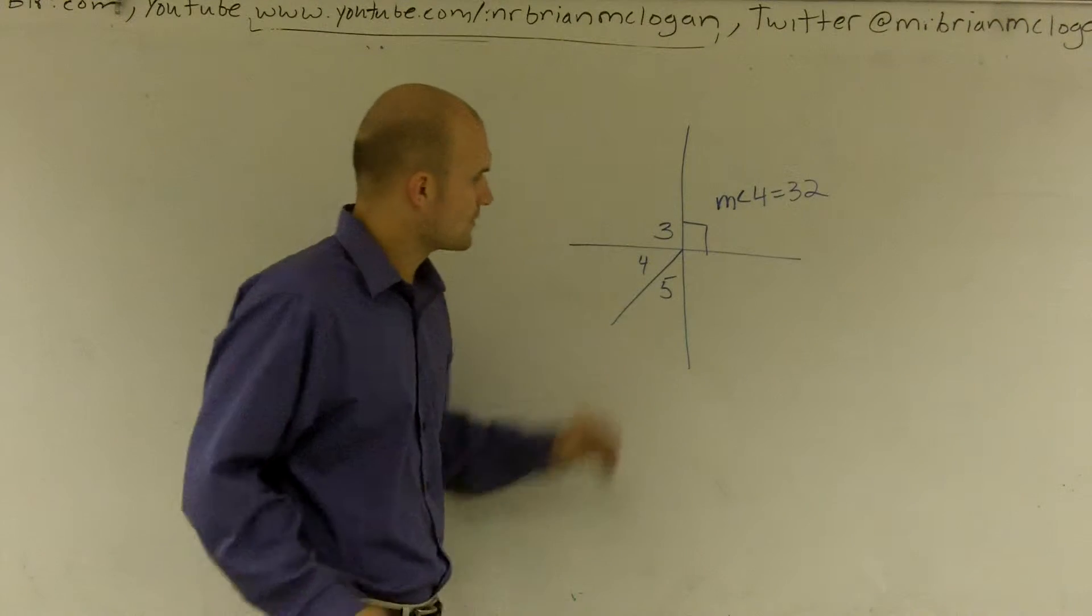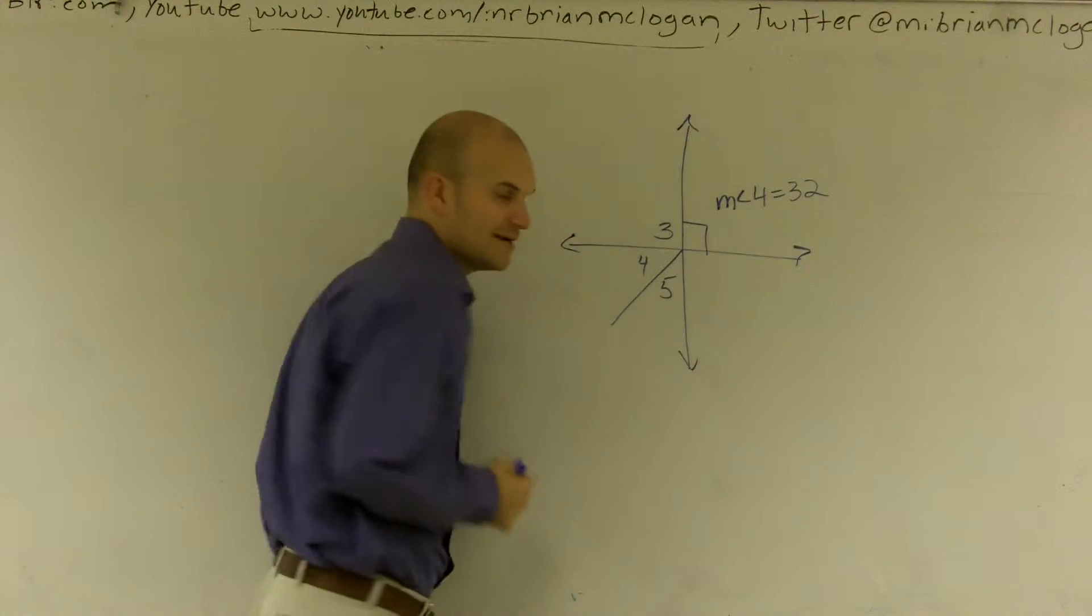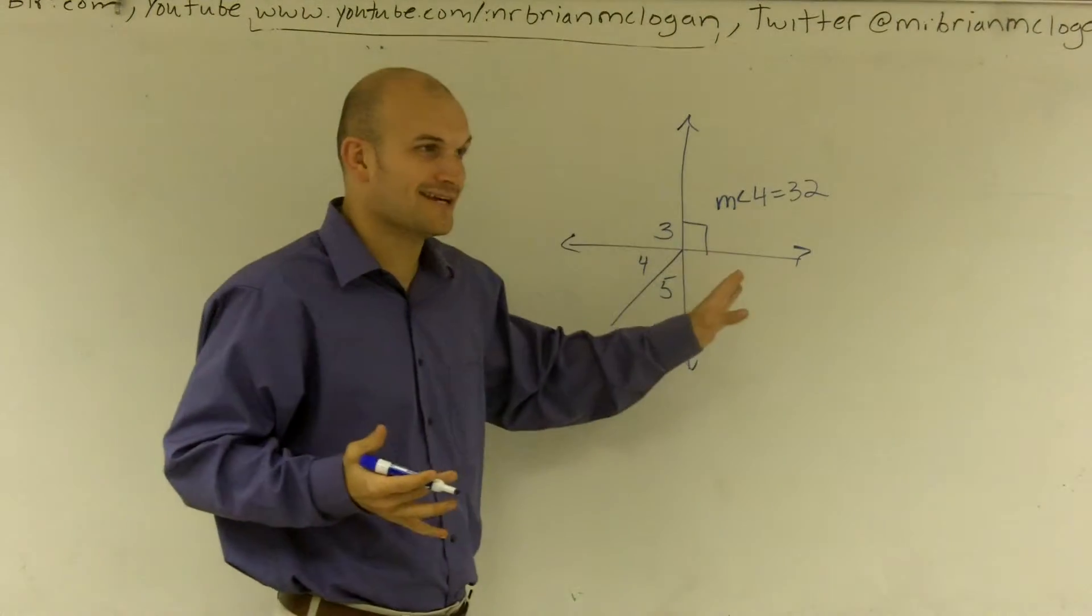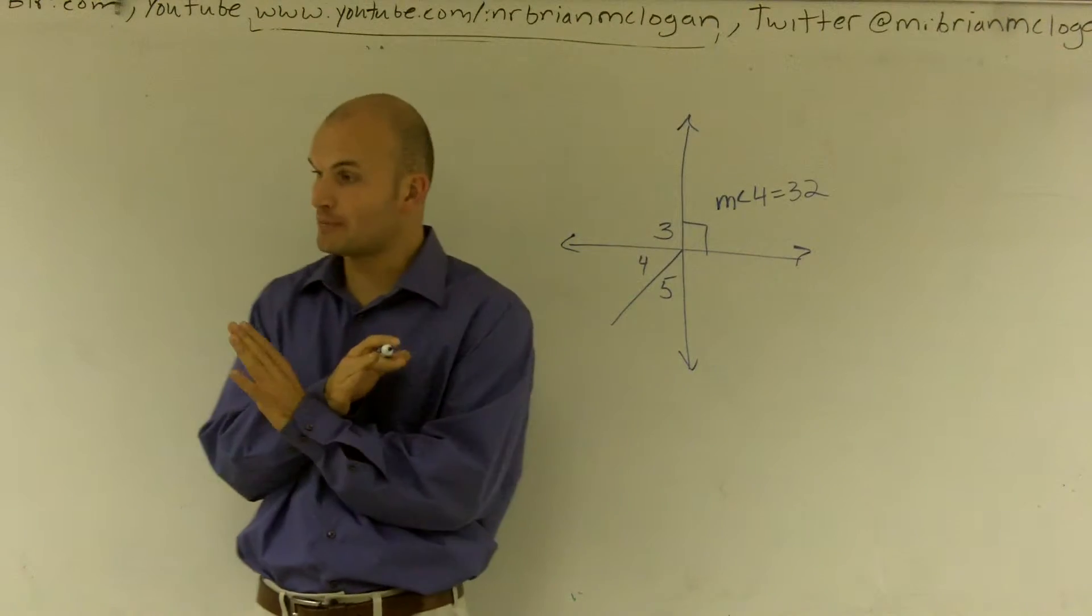OK, what we're doing is we're given two intersecting lines. One thing to notice about intersecting lines: if you have one right angle, you can actually say that all the rest of the angles—well, one right angle is telling you they're perpendicular.